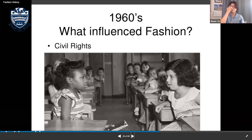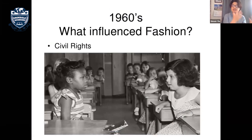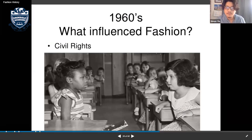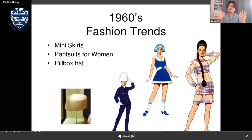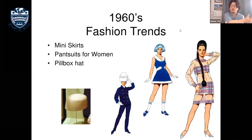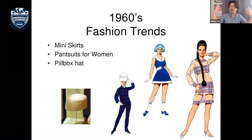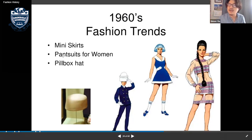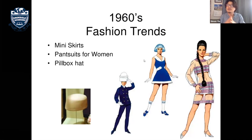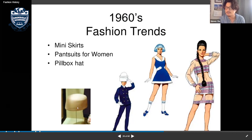The civil rights movement was a major influence in the 1960s, with the Black cultural movement gaining prominence. Women's clothing changed a lot — mini skirts were now acceptable, and pantsuits for women emerged. Before this, women were expected to wear dresses to work, but now they could wear pant suits like men. Pillbox hats also became fashionable.